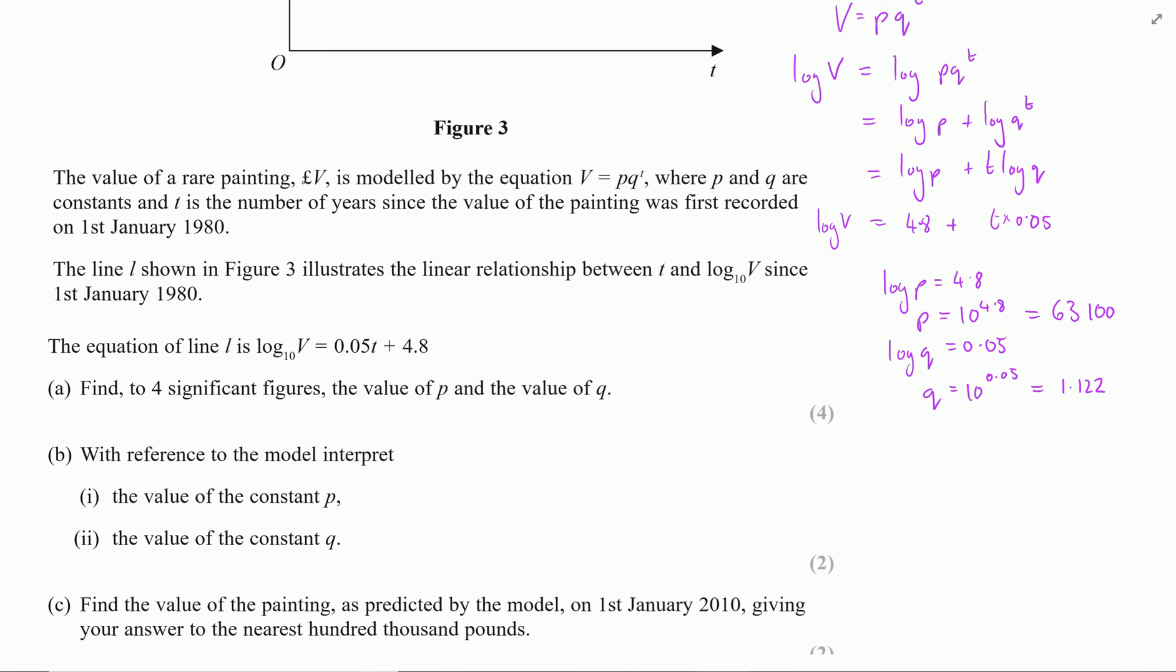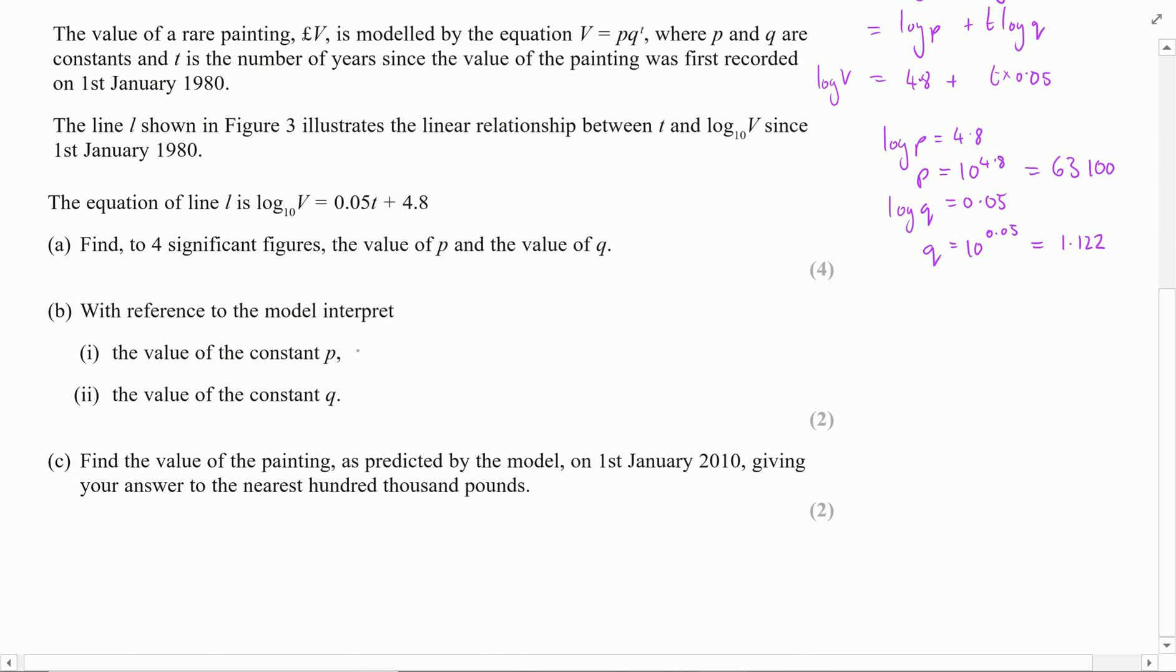With reference to the model, we want to interpret these values. Well, the value p would exist when t is zero, the initial time. So when t is zero, it's going to nullify the q and I just get left with p. So we would typically say that p, 63,100, is the initial value.